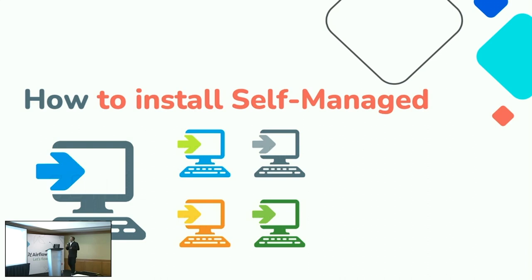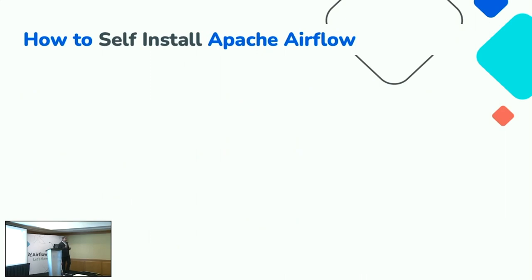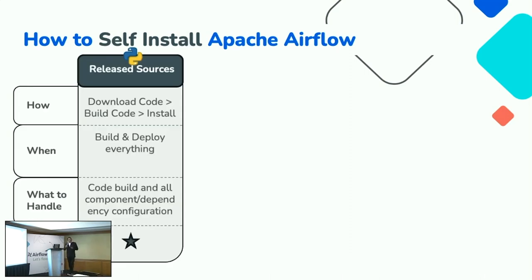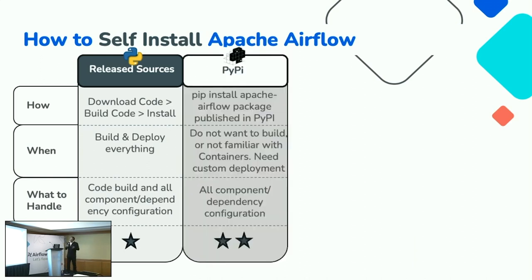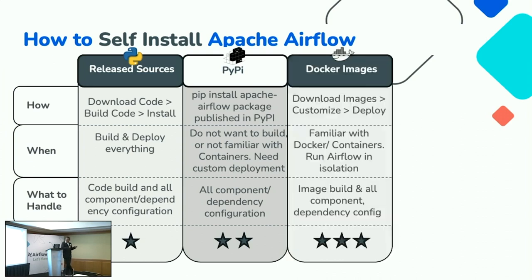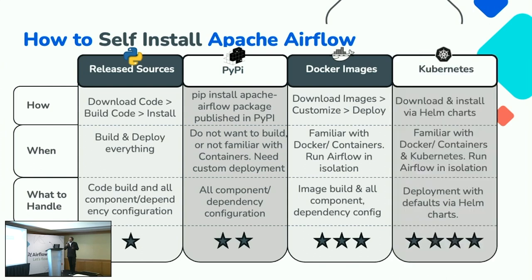Now that we've identified you need a self-managed Apache Airflow environment, how do you deploy it? If you look at self-installation options, there are four paths. First, download the open source code, build it, and deploy it on any server. Second, use it as a pip install on existing infrastructure. Third, use Docker images and Docker Compose support to download Apache Airflow's official Docker images and deploy them.